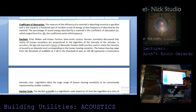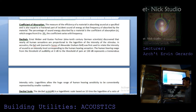The coefficient of absorption is the measure of the efficiency of a material in absorbing sound. It is equal to the fraction of incident sound energy at a given frequency absorbed by the material. The percentage of sound energy absorbed is represented by the absorption coefficient x, which ranges from 0 to 0.99. The coefficient varies with frequency.